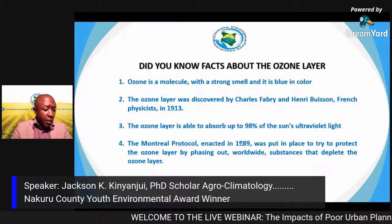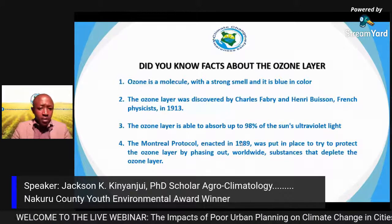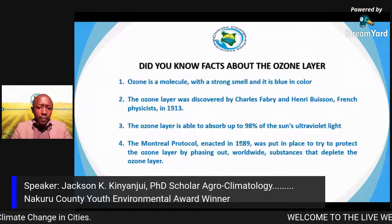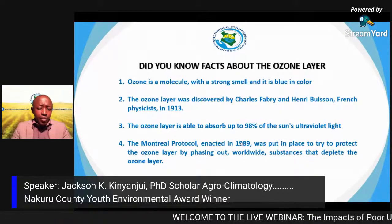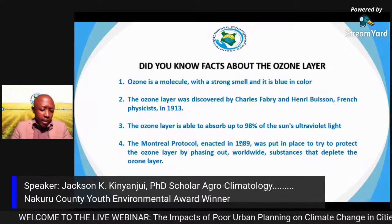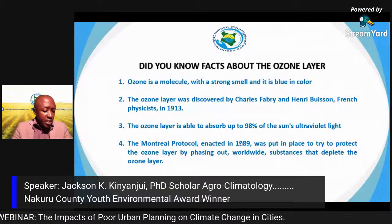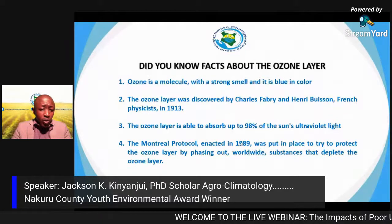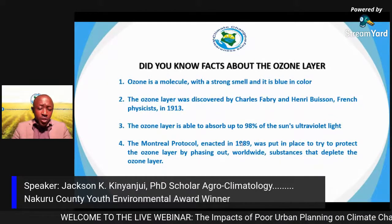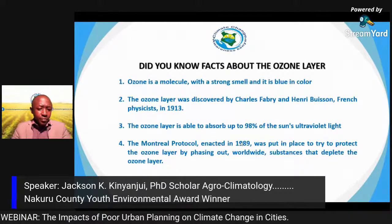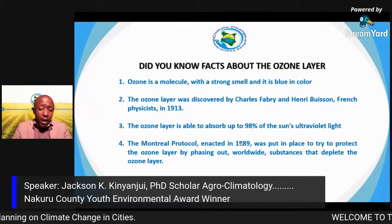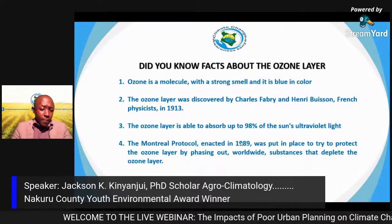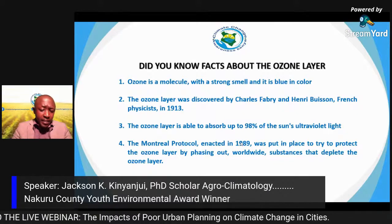Some facts about the ozone layer: the ozone molecule has a strong smell and is blue in color — which may explain why the sky appears blue. The ozone layer was discovered by French physicists Charles Fabry and Henri Buisson in 1913. The ozone layer is able to absorb up to 90 percent of the sun's UV light. The Montreal Protocol in 1987–1989 put measures in place to stop the widespread use and production of CFCs.